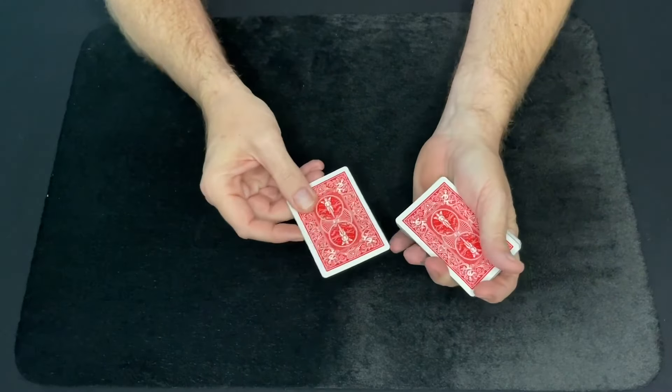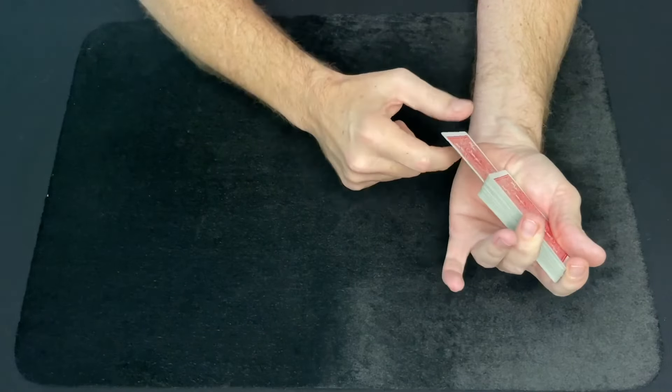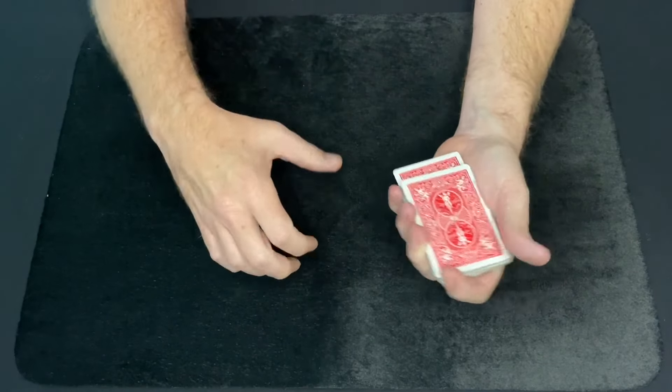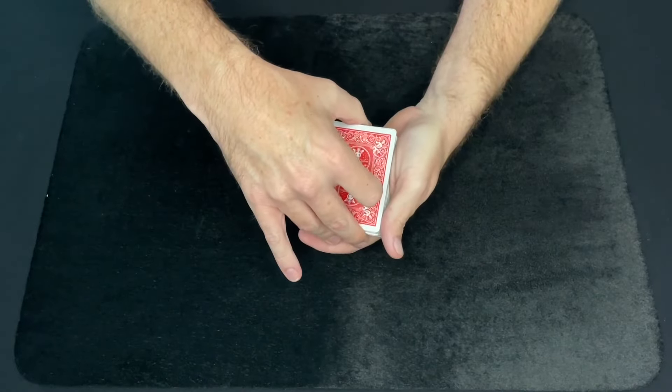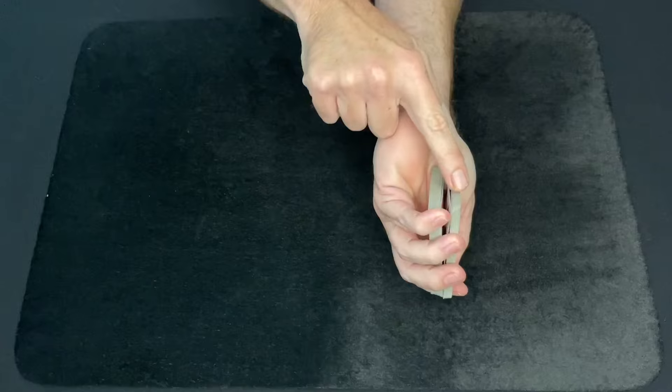You take their card, and what you say, you're going to lose it into the deck. You place it in about halfway down in the deck. Push it in, and then on the last push, you just push up with your thumb, getting a nice break with their card on the bottom of this top stack.